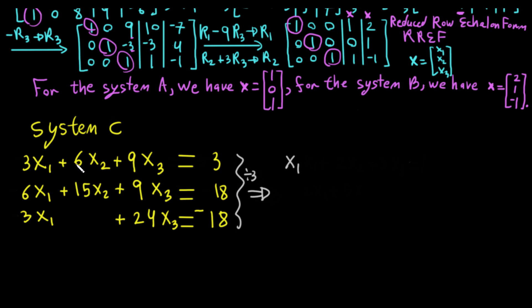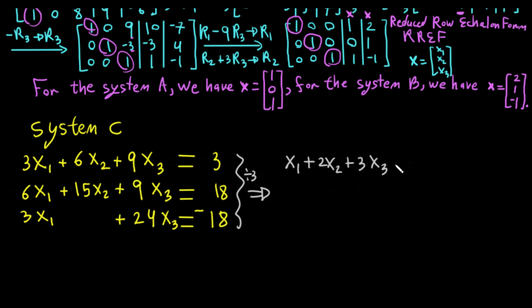Dividing by 3: 6 divided by 3 is 2, so we get 2x1. If we divide both sides of the equation by 3, we don't change anything in the equation or in the solution.